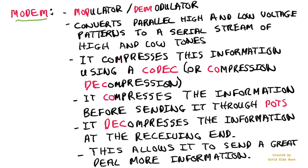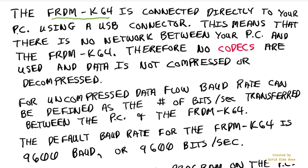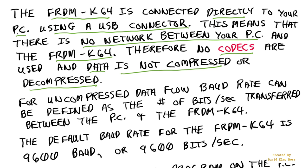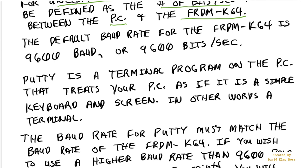Here we can see a summary of what the modem does. Now our Freedom K64 is connected directly to our PC using a USB connector. This means there is no network between your PC and the Freedom K64, therefore there are no codecs or compression-decompression algorithms between the two. The data is not compressed or decompressed as it goes between the two boards. For uncompressed data flow, the Baud rate is defined as the number of bits per second transferred between the PC and the Freedom K64. The default Baud rate for the Freedom K64 is 9600 Baud, or 9600 bits per second.